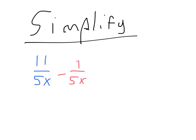If you're asked to simplify here, you should remember common denominators is the way to go. Since we have common denominators 5x and 5x, it means we can go ahead and subtract the numerators. Our final answer is going to have a common denominator of 5x.